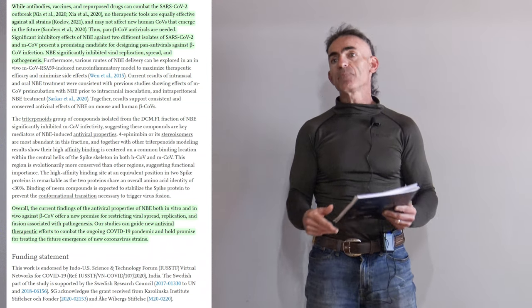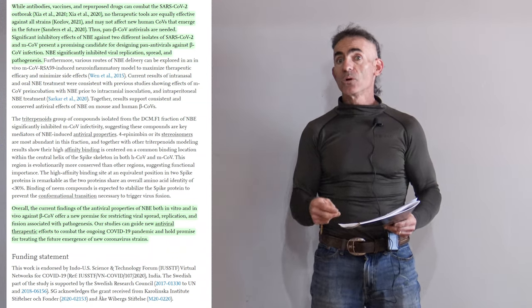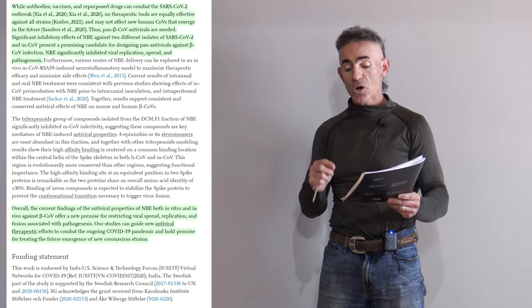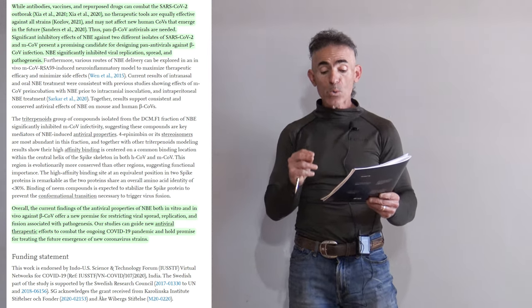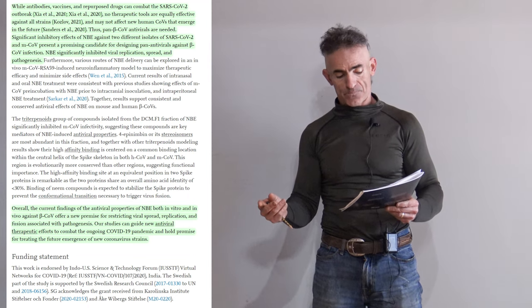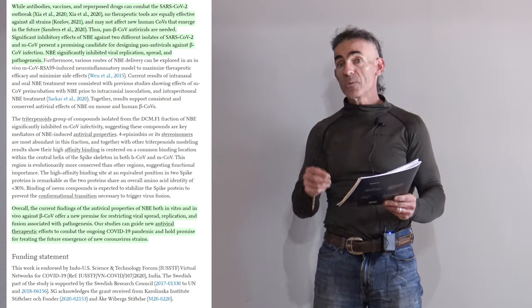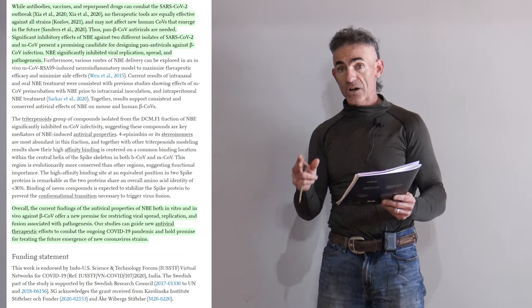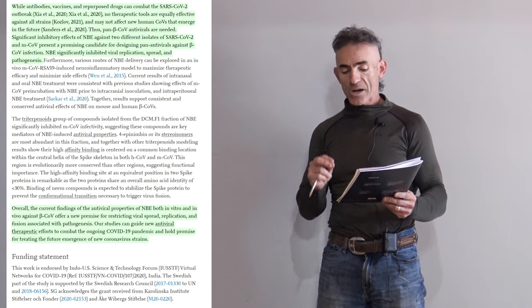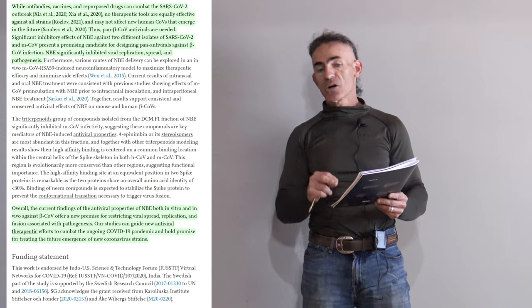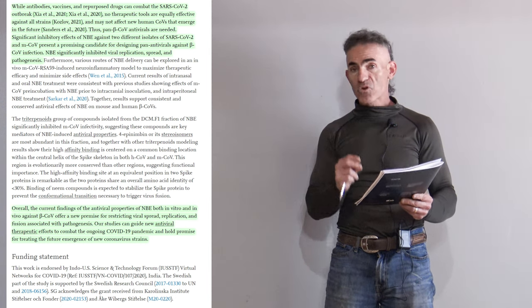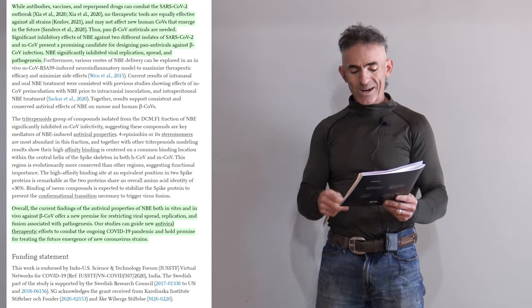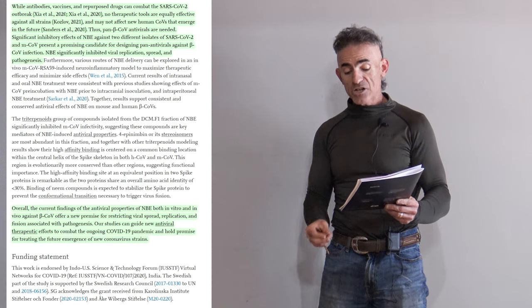Now we are going to delve into the full study, a little bit more technical but at the same time a little bit more exciting. When antibodies, vaccines, and repurposed drugs can combat the SARS-CoV-2 outbreak, no therapeutic tools are equally effective against all strains. It may not affect new human coronaviruses that emerge in the future. Thus, pan-beta-coronavirus antivirals are needed. Significant inhibitory effects of neem bark extract against two different isolates of SARS-CoV-2 and MCOV present a promising candidate for designing pan-antivirals against beta-coronavirus infections. Neem bark extract significantly inhibited viral replication, spread, and pathogenesis.